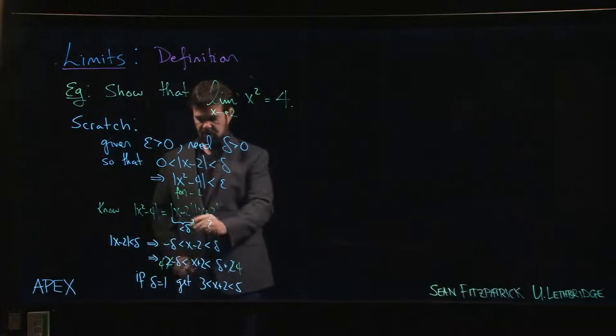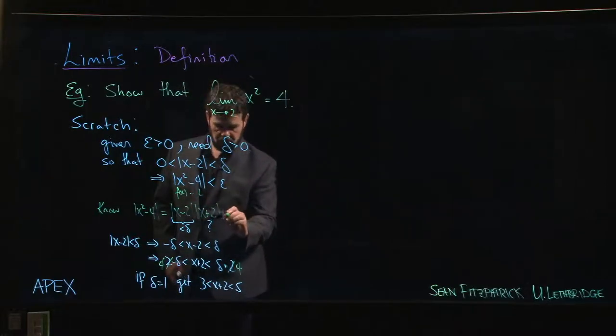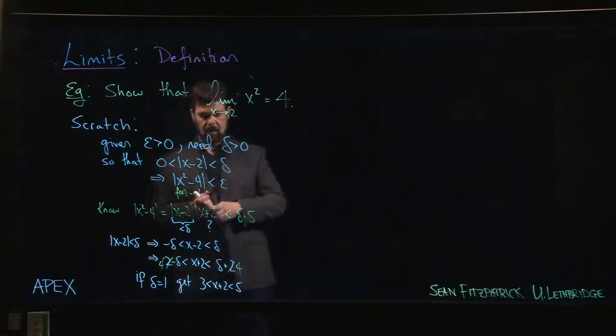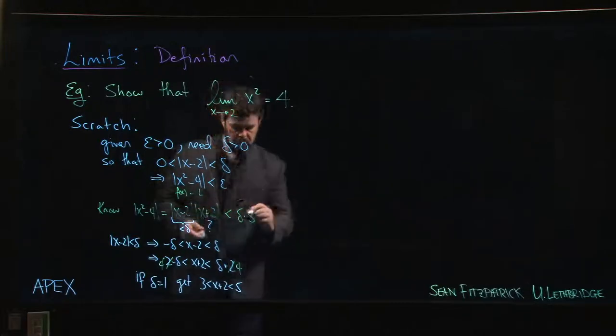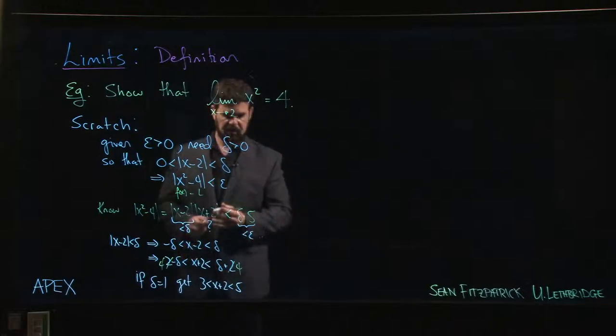And so with that assumption, we could come back to here and say, well, we've chosen this delta so that this part is less than 5. This part is less than delta. So overall, the whole thing would be less than delta times 5.